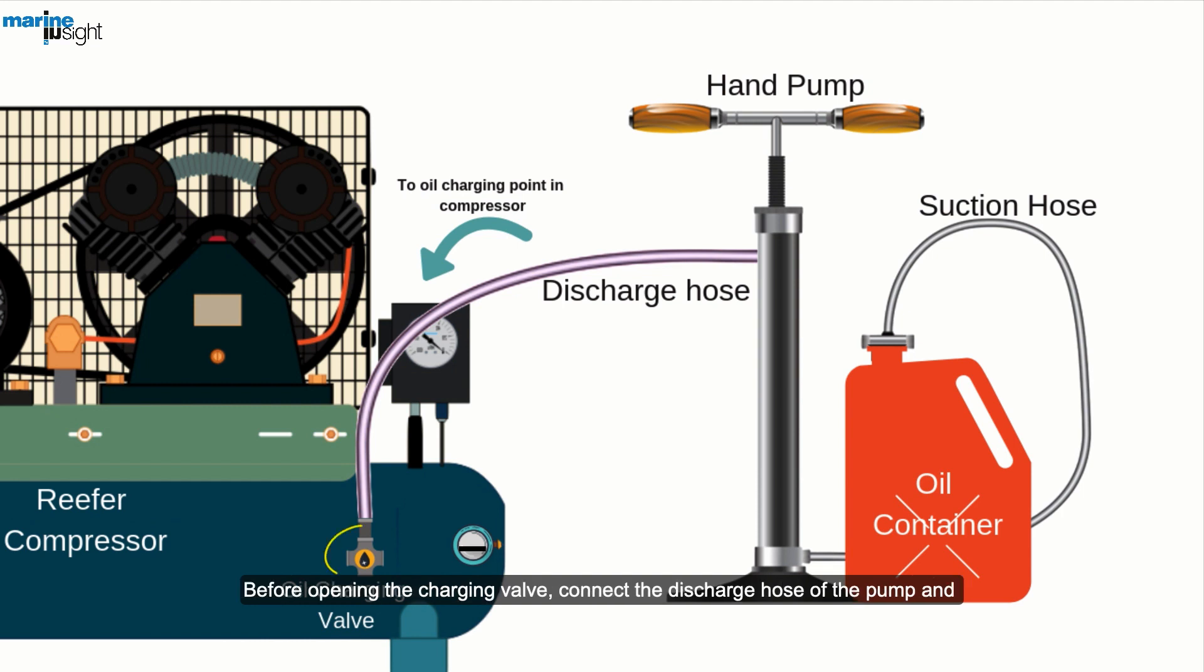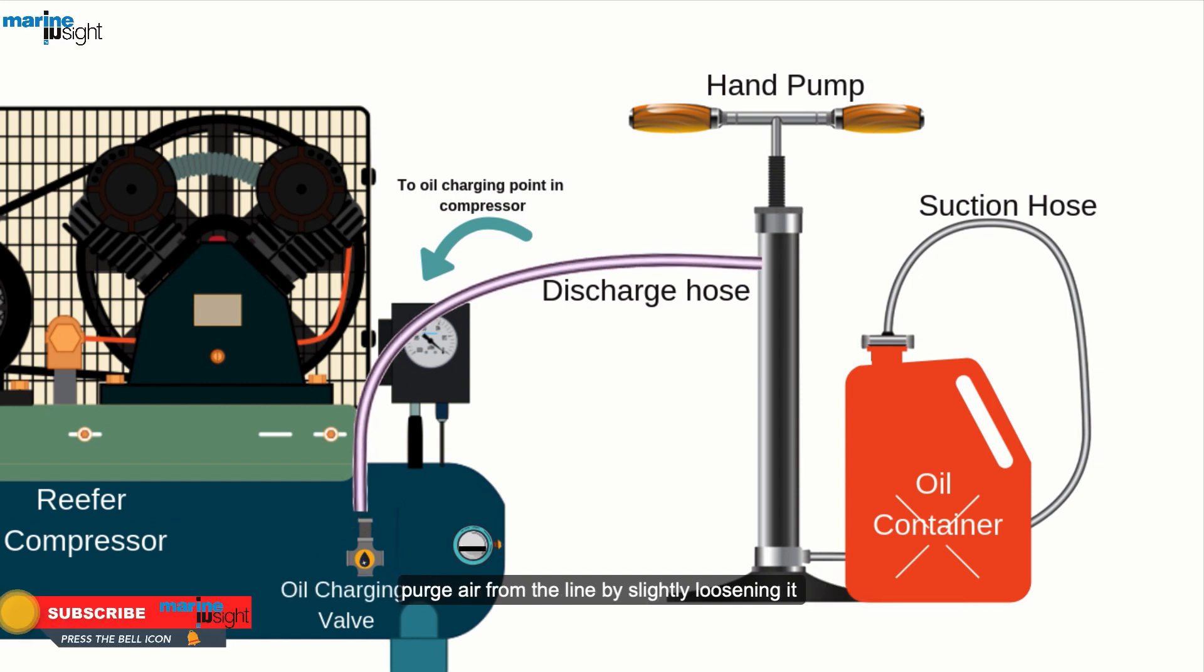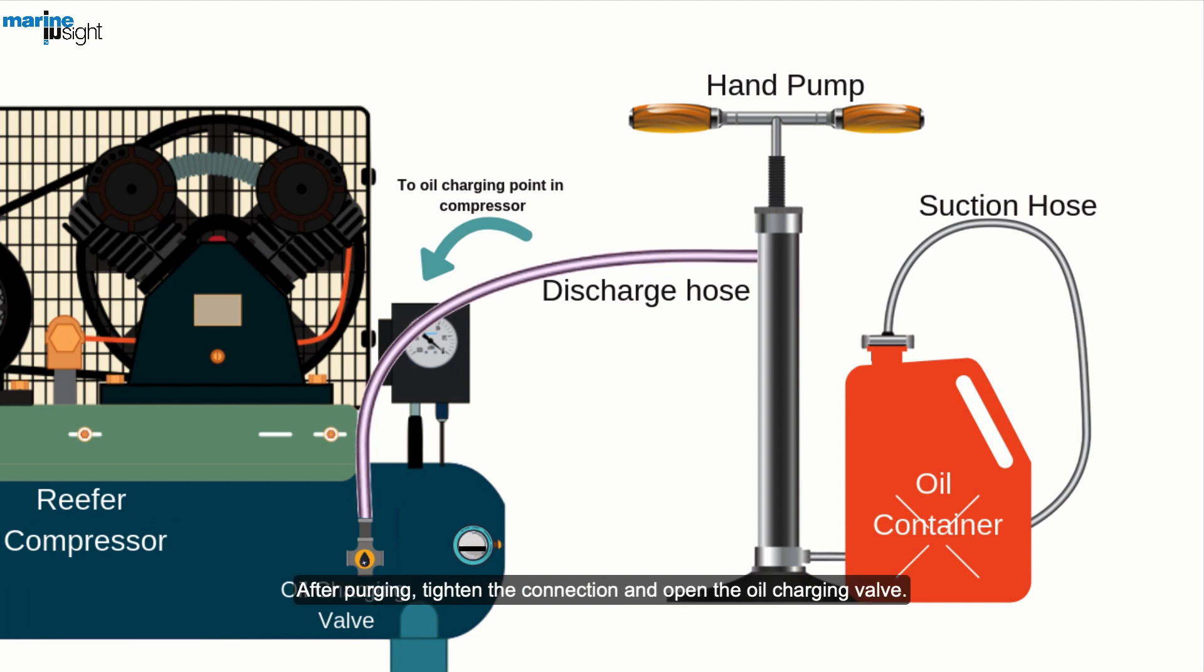Before opening the charging valve, connect the discharge hose of the pump and purge air from the line by slightly loosening it. After purging, tighten the connection and open the oil charging valve.